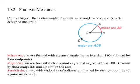First, I have a central angle. The central angle of a circle is an angle whose vertex is the center of the circle. I have a central angle right here because C is the center of the circle, and it's also the vertex of the angle. The vertex is the tip of the angle.